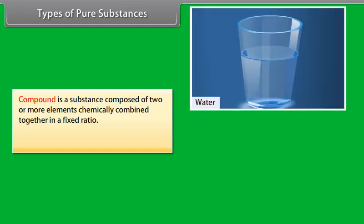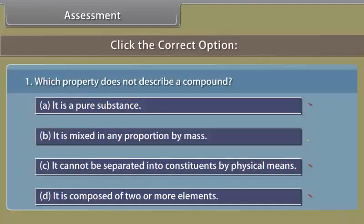Compound is a substance composed of two or more elements chemically combined together in a fixed ratio. Examples include water, carbon dioxide, sugar, salt, iron sulfide, etc.